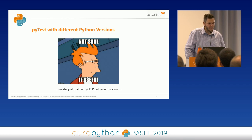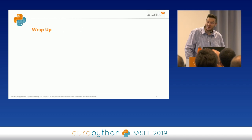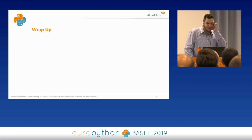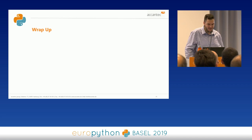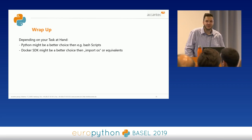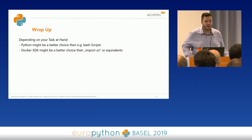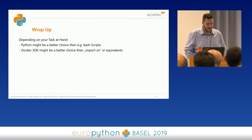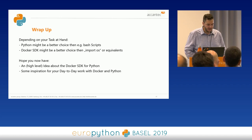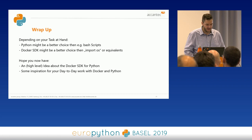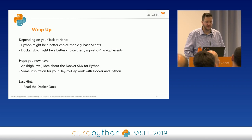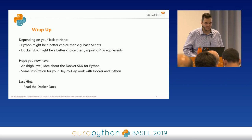I'm noticing I'm way too fast, so this is already a wrap-up. Depending on your task at hand, Python might be a better choice than a bash script, especially if you want to maintain it and keep it readable. The Docker SDK might sometimes be a better choice than import os or equivalents. I hope you at least have a high-level idea about the Docker SDK and some inspiration for your day-to-day work. As a last hint, I can really recommend the Docker documentation — it's usually up-to-date, really good, and full of information.